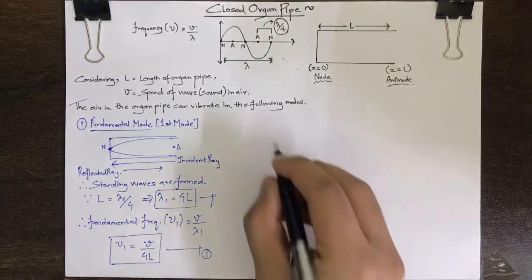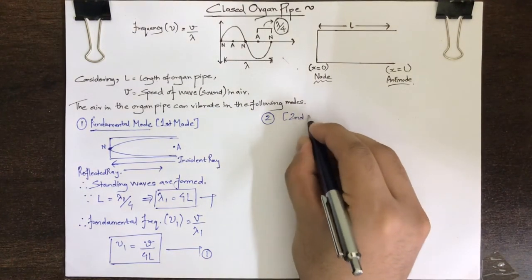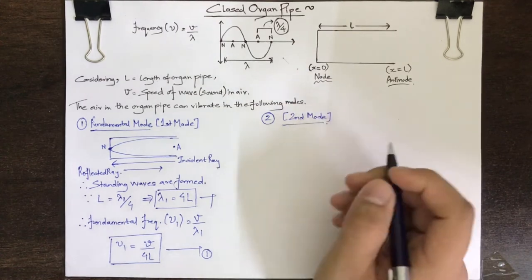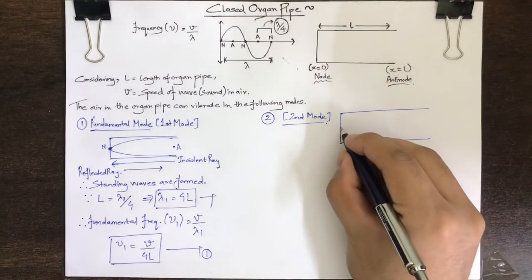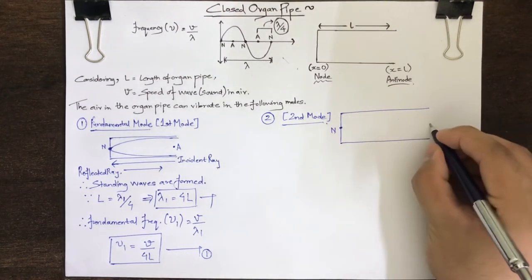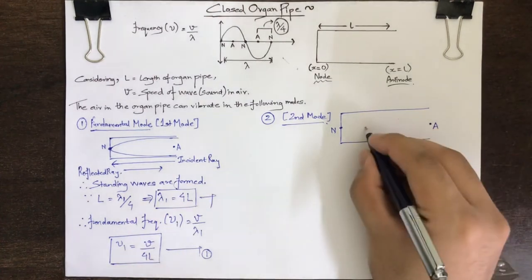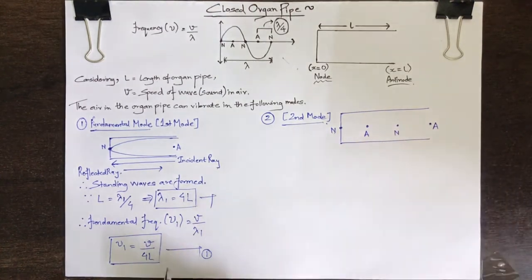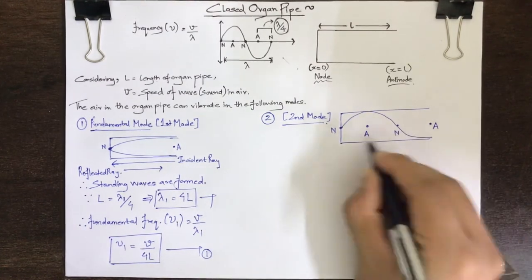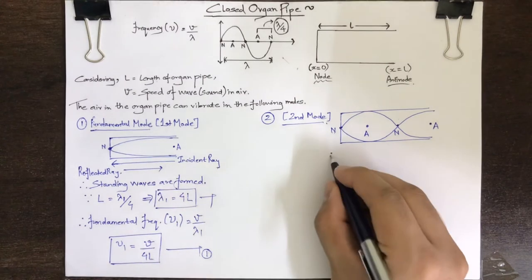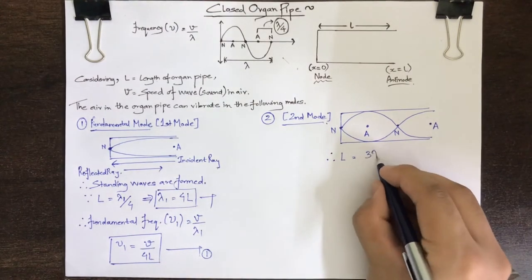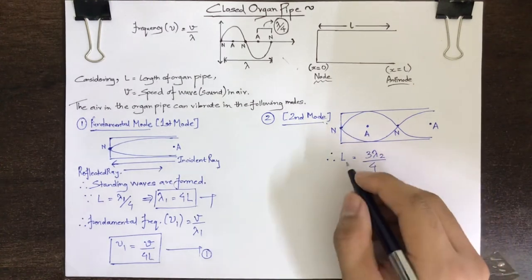Next comes the second mode. Let lambda 2 be the wavelength of the standing wave set up in the pipe. The mode of vibration in this type of mode is shown in the figure, where one additional antinode and one additional node are formed between closed and open ends of the pipe. As there are three separations of adjacent node and antinode between the open and the closed end, the length of the considered organ pipe will be equal to 3 lambda 2 upon 4.